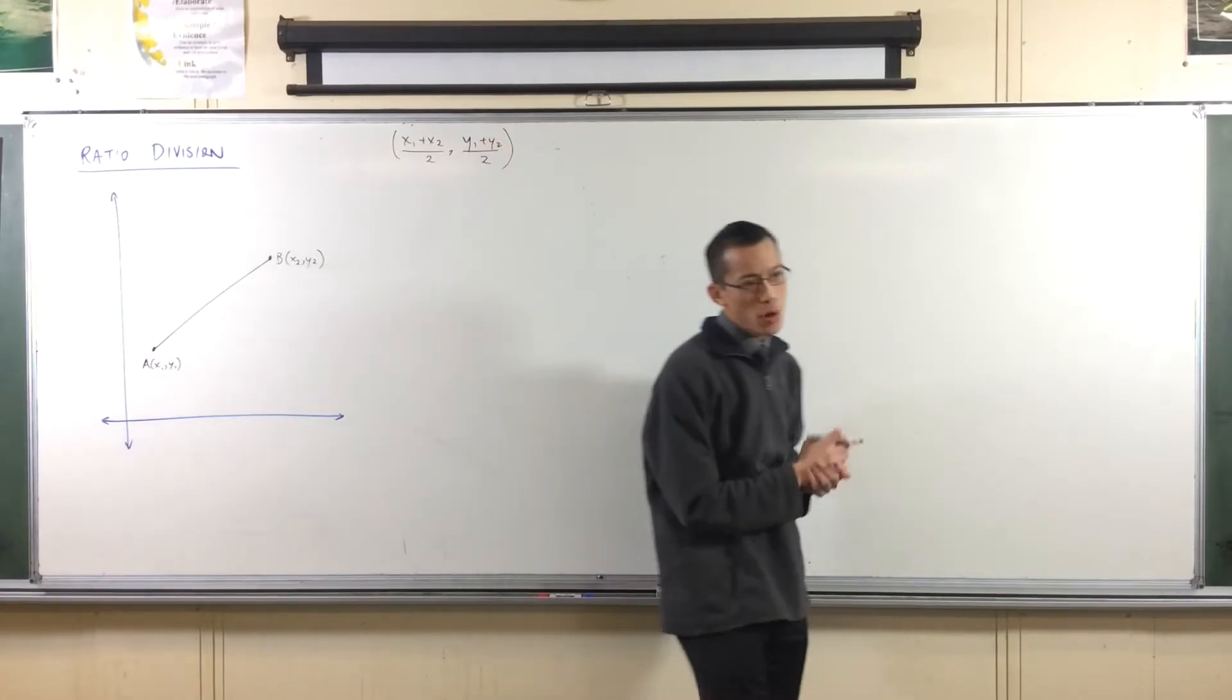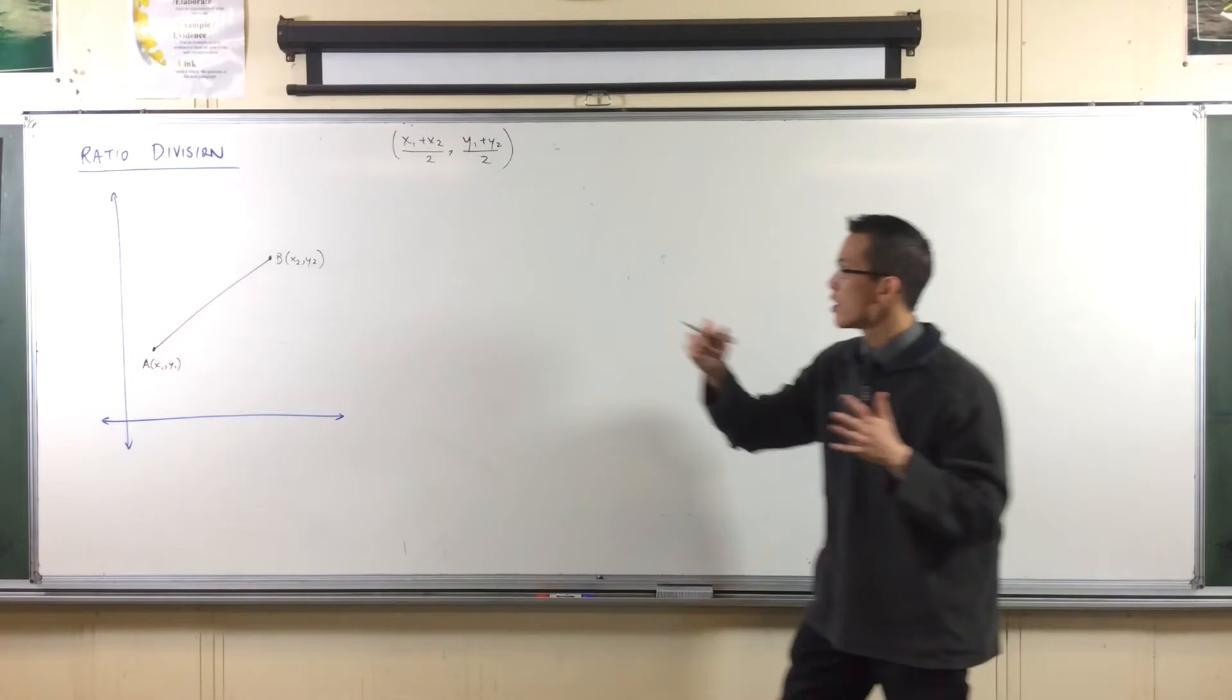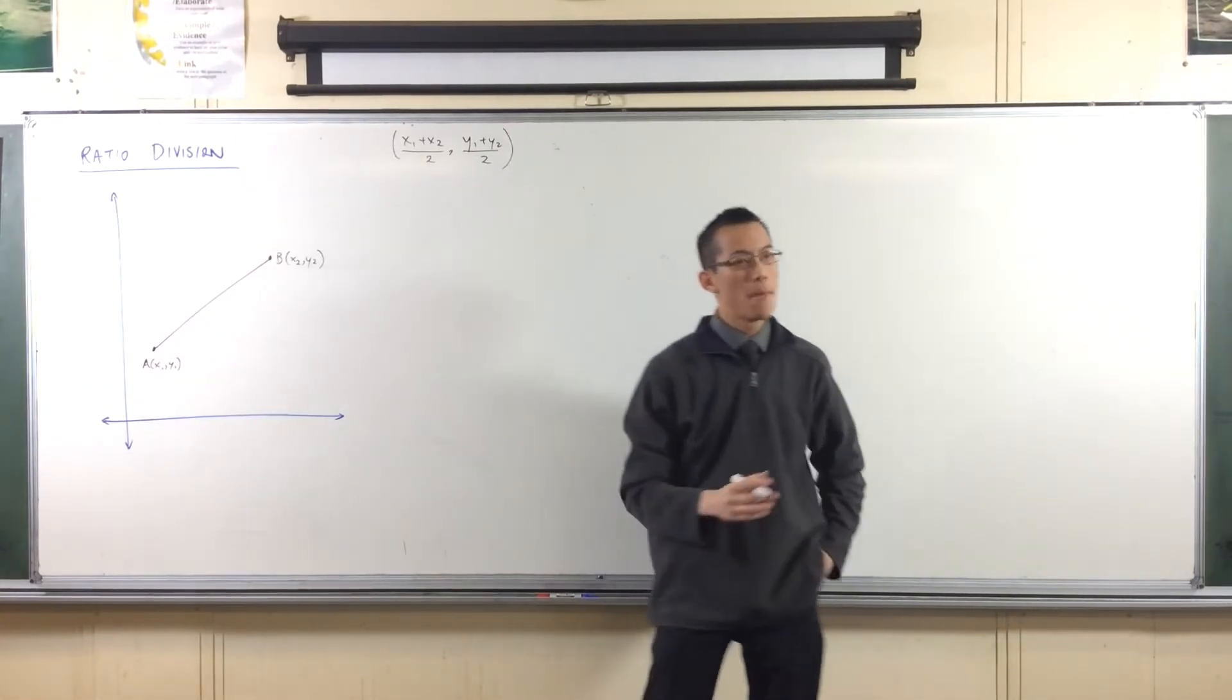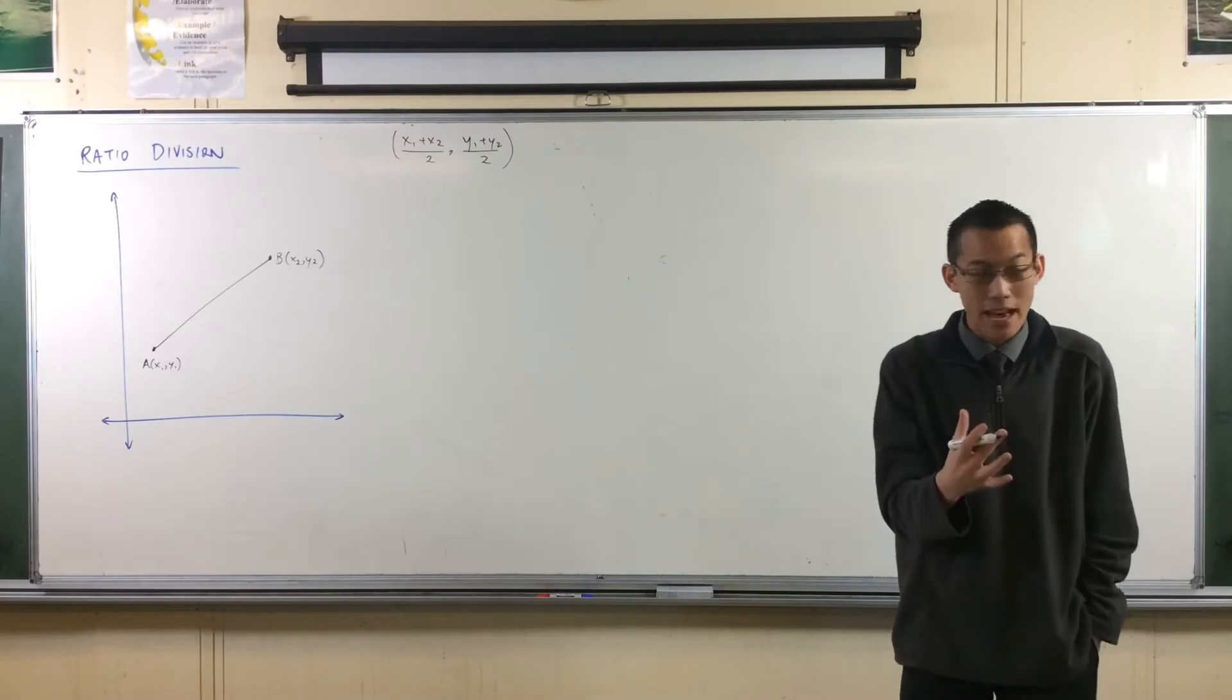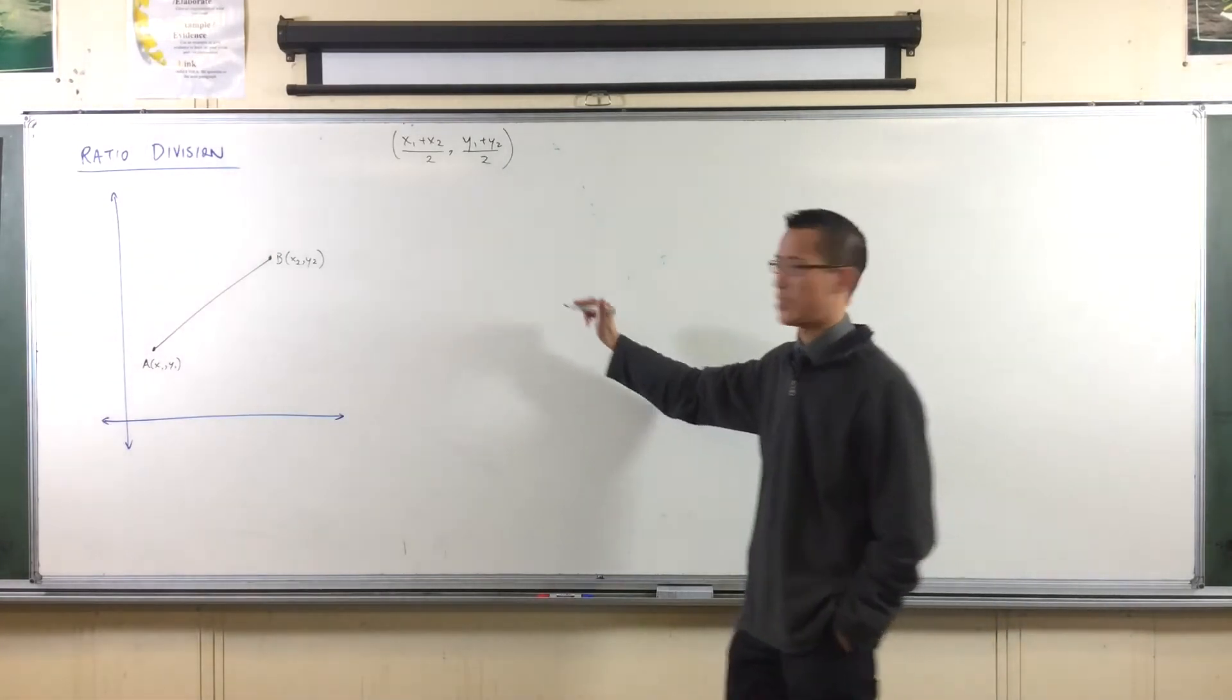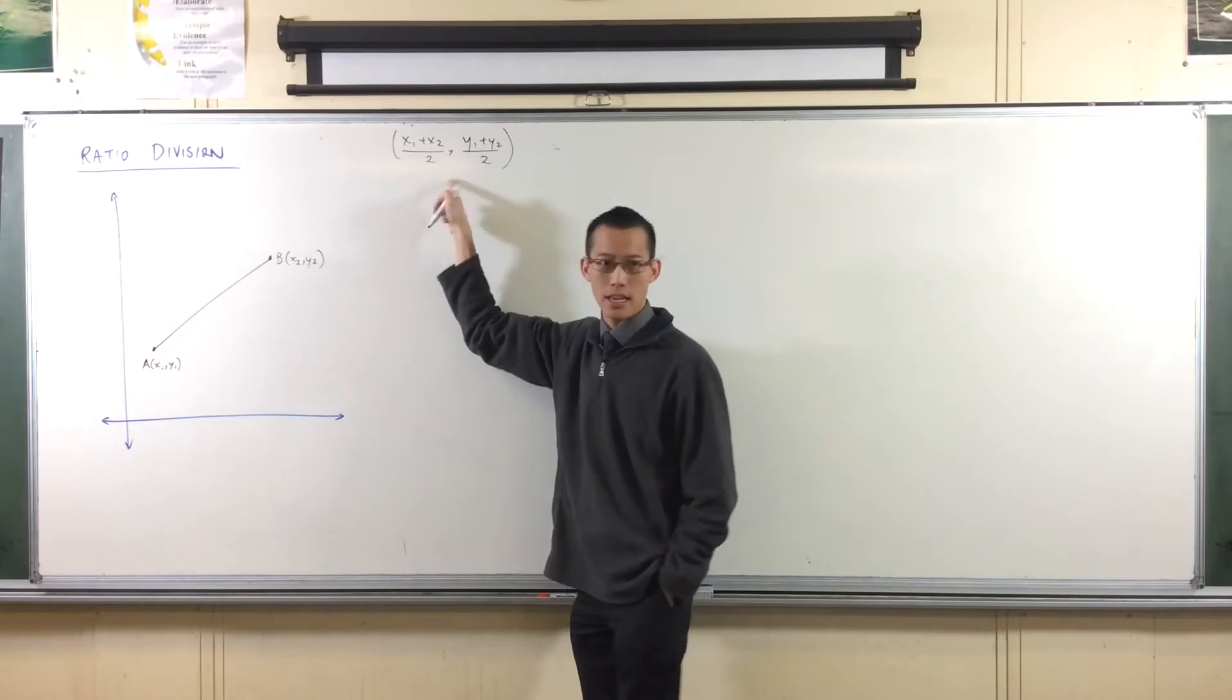Okay, so when you are thinking about ratio division, you want to think about it as, this is kind of like midpoint, but I want to be a little more finely controlled. I want to pick a particular value, not just one-to-one. But you're going to get something much the same. Like, think about what's happening here, okay?